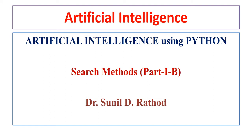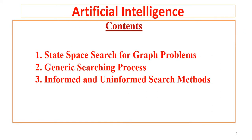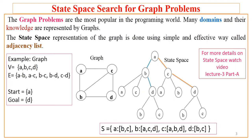Welcome to the world of artificial intelligence — this is the 'AI using Python' series of lectures. This is lecture on search methods, Part 1B. Hi, I'm Dr. Sunil from GCS Solutions. The contents of this lecture are: state-space search for graph problems, the generic search process, and informed and uninformed search methods. We'll see each one of these in detail in the subsequent slides.